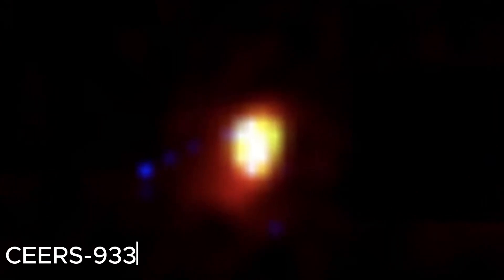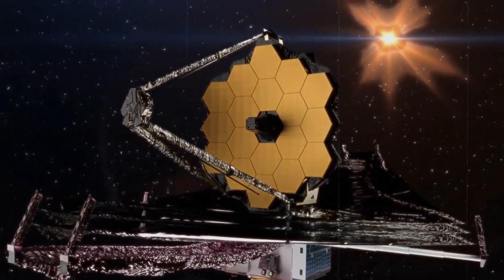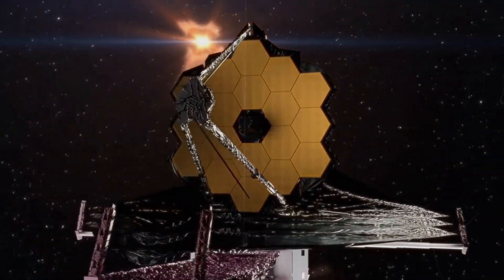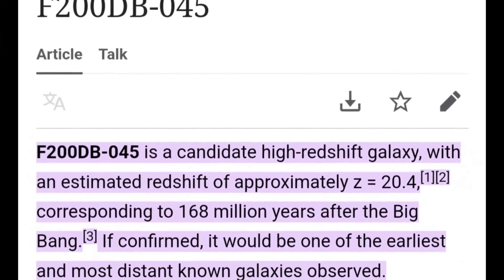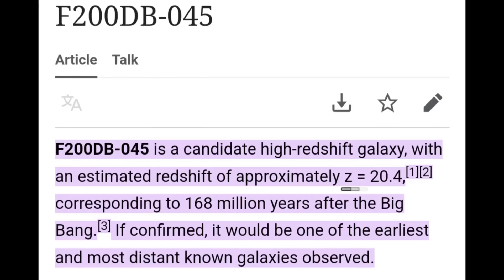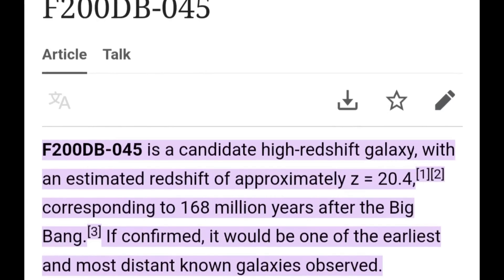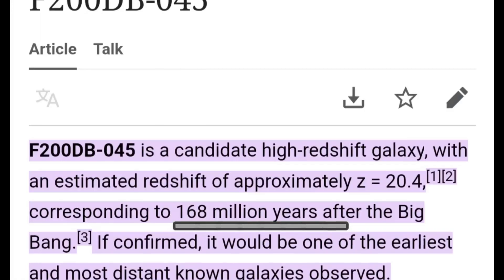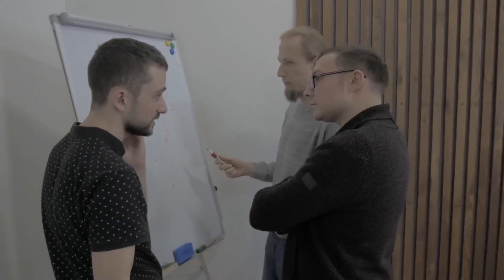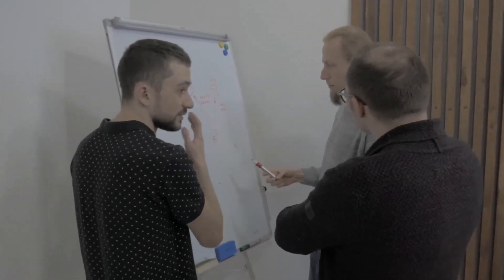Take for instance the year 2022, when astronomers believed that SEARS 93316 was the most distant known unconfirmed galaxy. Later studies revealed it wasn't as distant as initially thought but instead appeared highly reddened by dust clouds. Yet the Webb telescope has once again shattered expectations by uncovering a galaxy candidate with an ultra-high redshift. The newly identified F200DB-045 is estimated to have a redshift of approximately z equals 20.4, corresponding to just 168 million years after the Big Bang. If confirmed, this would make it one of the earliest and most distant galaxies ever observed.